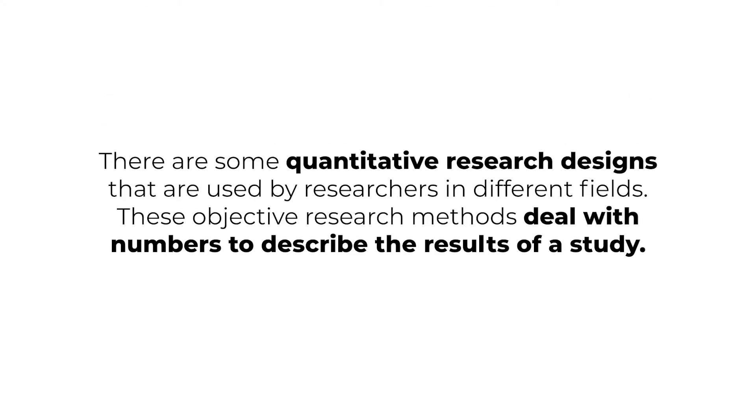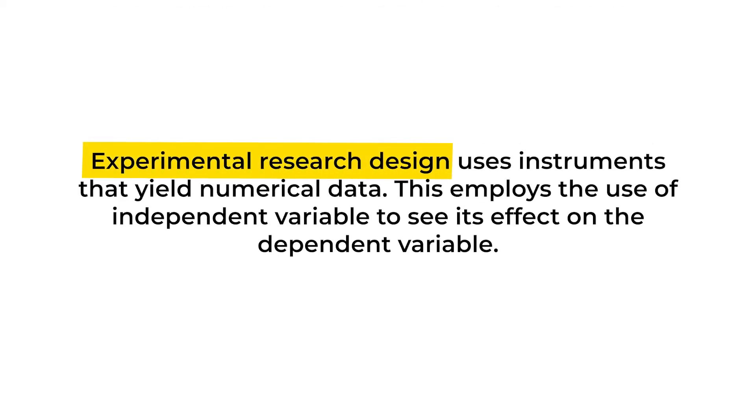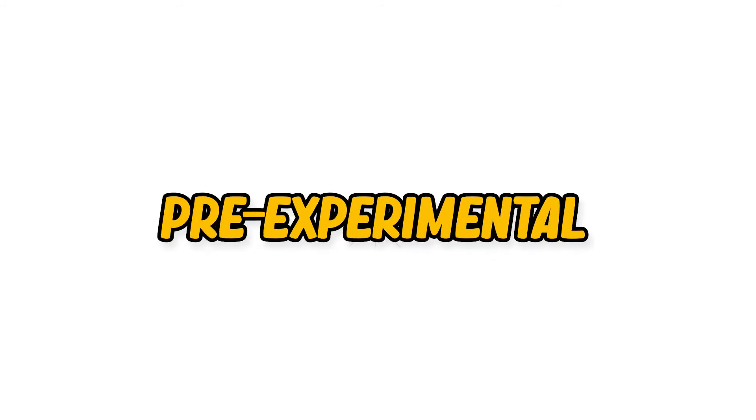There are some quantitative research designs used by researchers in different fields. These objective research methods deal with numbers to describe the results of study. Among these research designs, experimental research is the most applicable in action research where an intervention or action is implemented to address a specific classroom issue or problem. Experimental research design uses instruments that yield numerical data and employs the use of an independent variable to see its effect on the dependent variable. The researcher may choose from among three types: pre-experimental, quasi-experimental, and true-experimental.